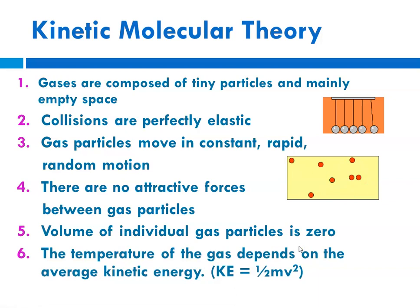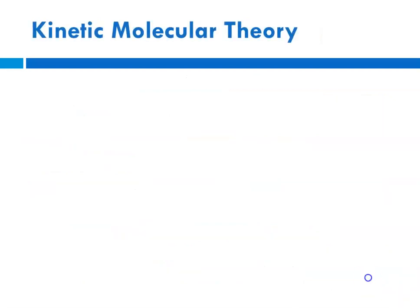And the temperature of the gas depends on the average kinetic energy of the particles. So when you're measuring temperature, you're actually measuring the average kinetic energy of the particles. And when we talk about temperature for gases, we always have to use Kelvin temperature because the temperature where all motion ceases in our universe is absolute zero, which is zero degrees Kelvin. So again, this kinetic molecular theory is referring to an ideal gas.